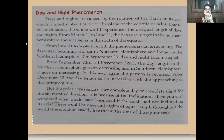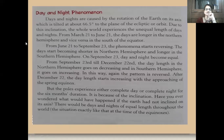The poles experience either complete day or complete night for six months' duration. Both the North Pole and South Pole experience each six months of day and six months of night. This is because of the inclination of the Earth's axis. If the Earth were not inclined on its axis, there would be days and nights of equal length throughout the world — a situation like a permanent equinox.